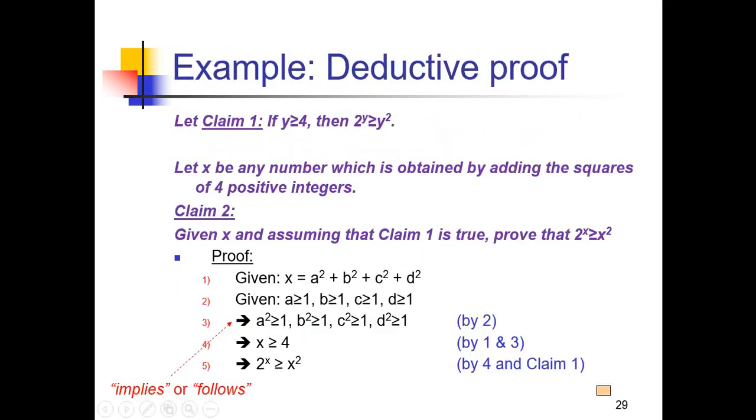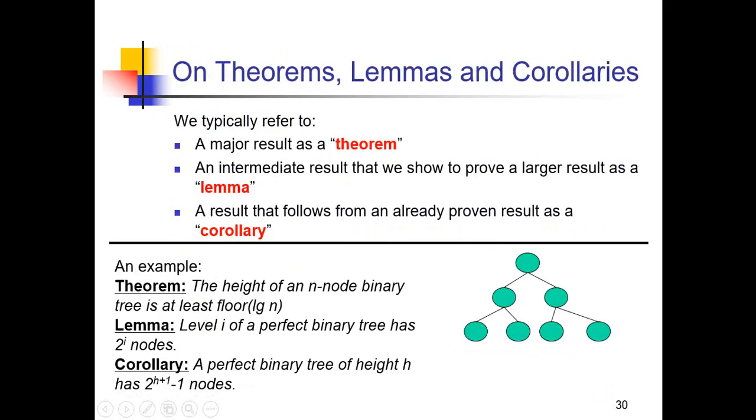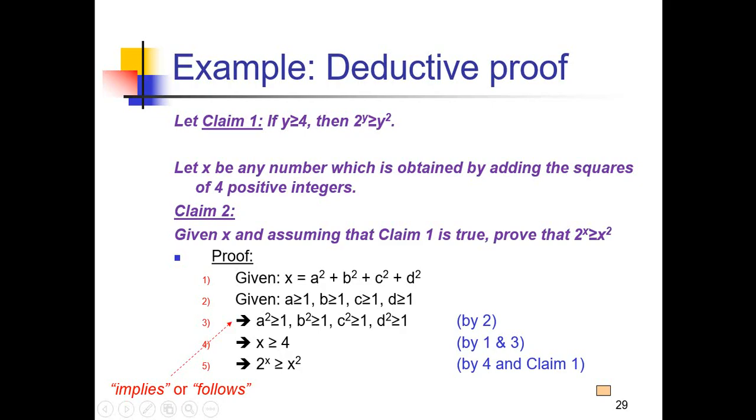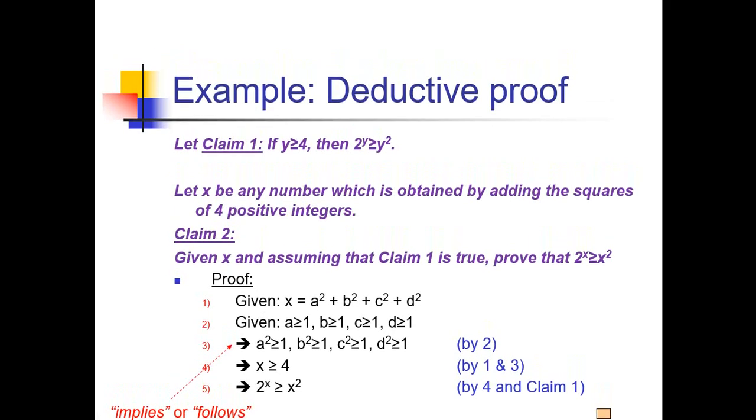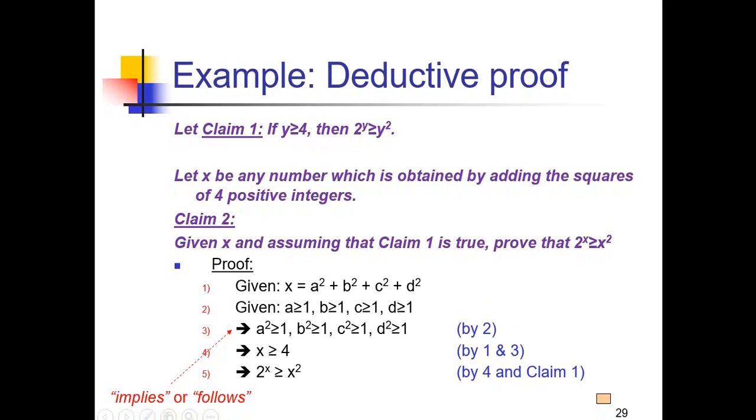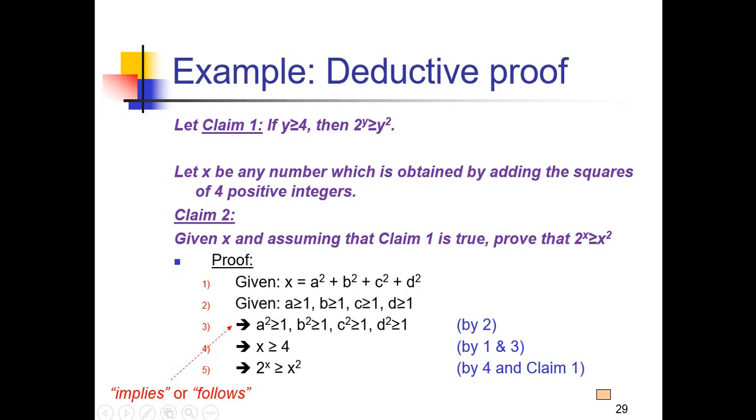Example of deductive proof is given here. You must prove this condition. We have x = (a+b+c+d)². Here we have given a, b, c, and d all are ≥ 1. If we have a², b², c², and d², that will also be ≥ 1.